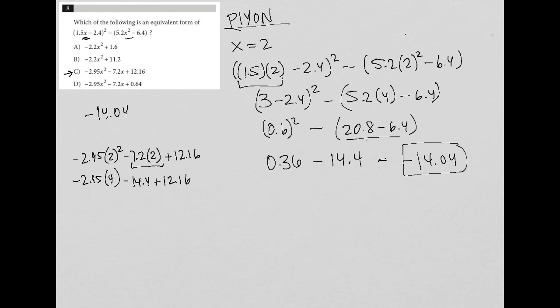And negative 2.95 times 4 is negative 11.8, so minus 14.4 plus 12.16. I just throw all this into my calculator,